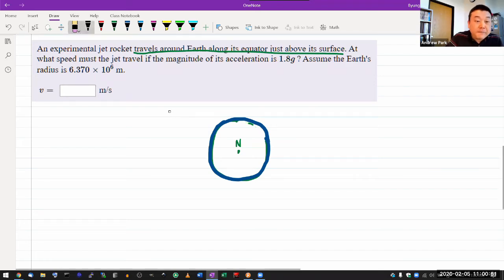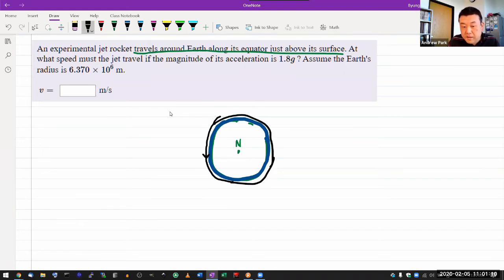This is the path of the experimental jet rocket. It's traveling around the earth along its equator, so this is the path of the rocket. This is where I say oh, so it is moving in a circle. The thing about the centripetal acceleration and circular motion is that whenever something is moving in a circle you have to recognize that it is accelerating, and the amount of acceleration is given by